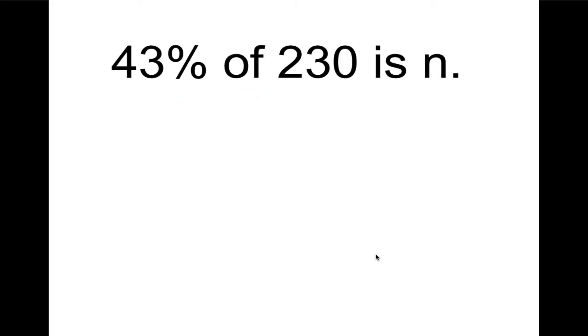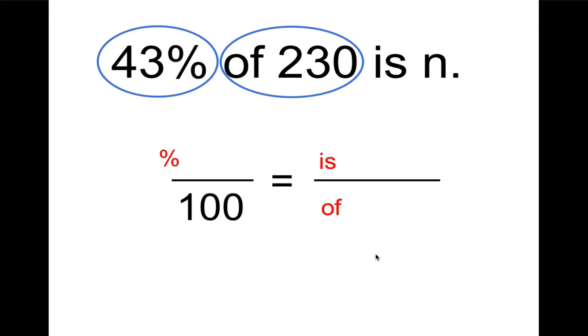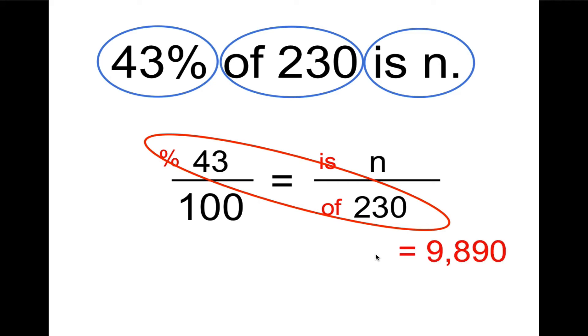So here's an example for you to try on your own. Check back with me, hit the space bar and solve it, and then check back with me afterwards. All right, we always hang these numbers on the same frame. The frame looks like this: percent over 100 equals is over of. And again, I like to circle. So 43 is my percent, 230 is the whole amount, and we're looking for the part, n. So once again, we're going to multiply the two numbers that are diagonal to each other. In this case, 43 times 230 equals 9,890. Dividing by 100 moves the decimal two places to the left. So that's going to be 98.9.